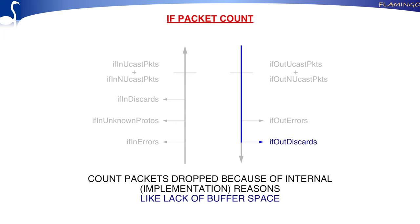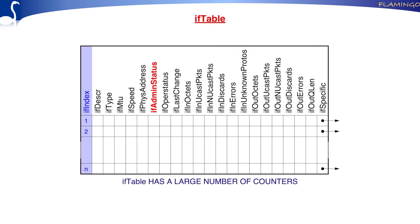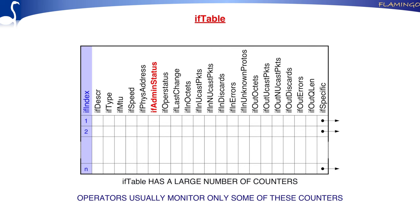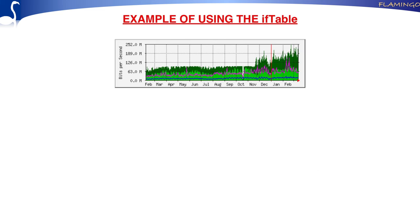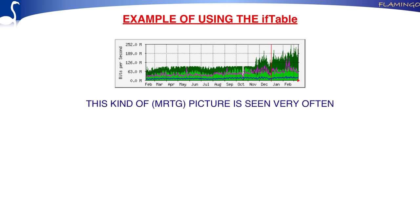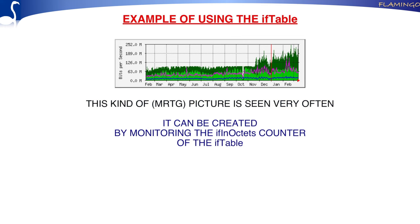Most operators just look at some of these variables because many give too detailed information. By looking at just some of them you already get quite useful information. These kinds of traffic pictures you see very often with operators — generated by looking at some of the variables in the interface table. Very simple but still very useful.